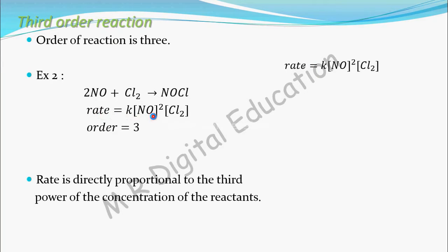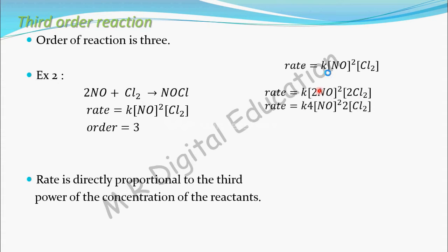Consider the rate equation. When we double the concentration of both reactants — increasing [NO] two times and [Cl₂] two times — we take the 2 outside: that gives 2² = 4 for NO, and 2¹ = 2 for Cl₂. So 4 × 2 = 8. The rate increases eight times, which is 2³. When you double the concentration of both reactants, the rate increases 2³ = 8 times.